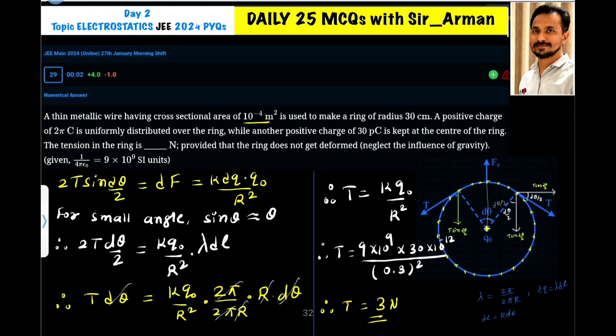A thin metallic wire having cross-sectional area 10^-4 m² is used to make a ring of radius 30 centimeters. A positive charge of 2π coulombs is uniformly distributed over the ring, while another positive charge of 30π coulombs is kept at the center of the ring.